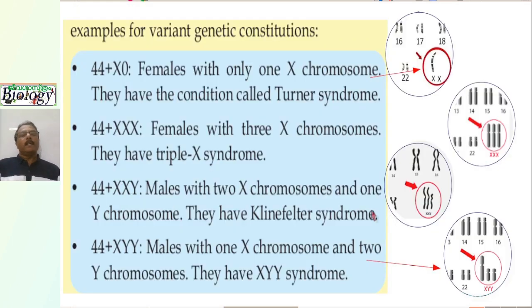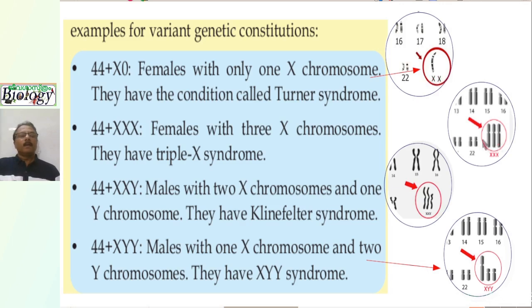Sometimes variation may occur in genetic constitution. For example, two syndromes called Turner syndrome and XXX syndrome are mainly seen in females. In Turner syndrome, one X is absent. In XXX syndrome, one extra X is present. Similarly, in males, Klinefelter syndrome shows one extra X — normally XY, but here XXY. In XYY syndrome, an extra Y chromosome is present.